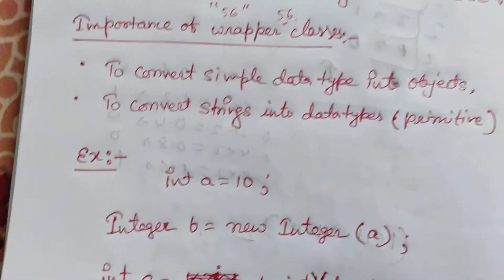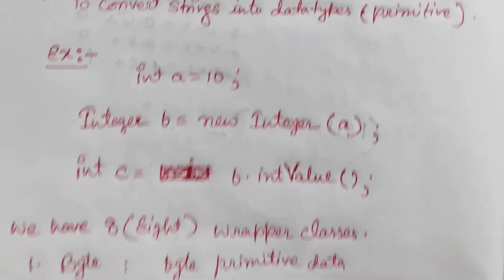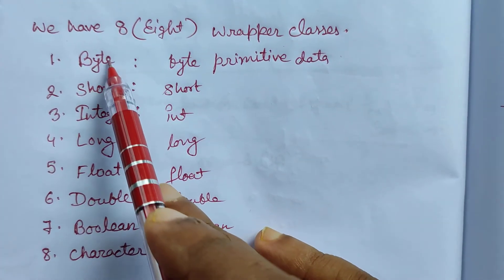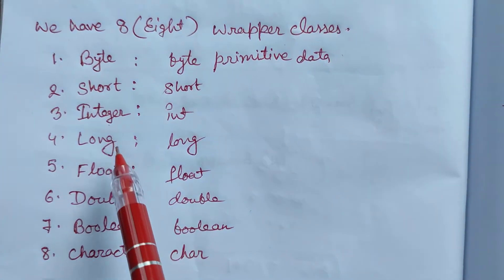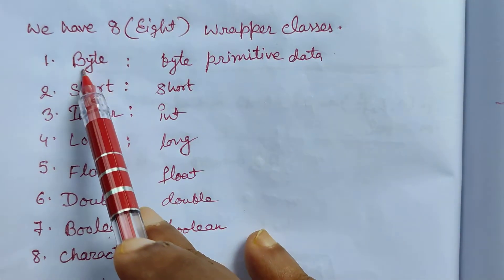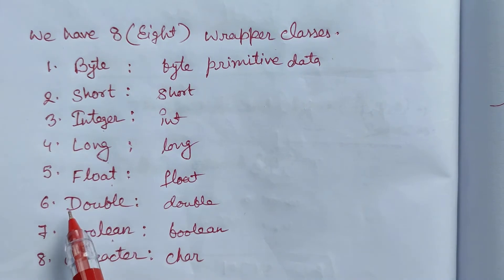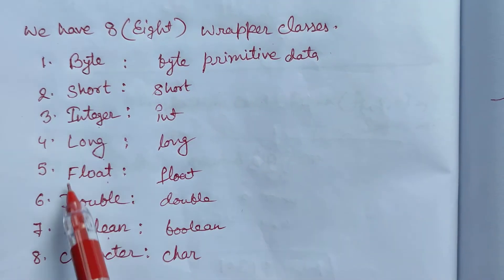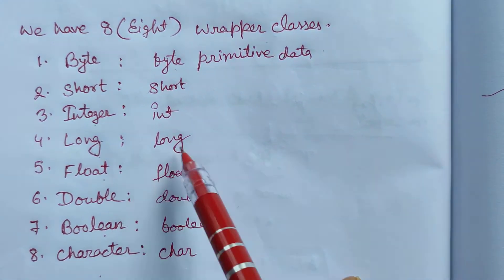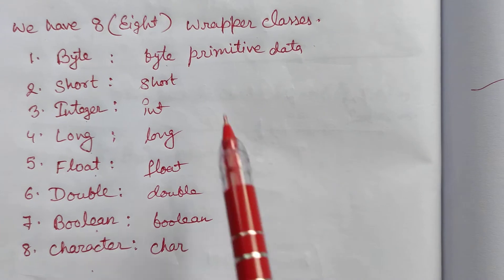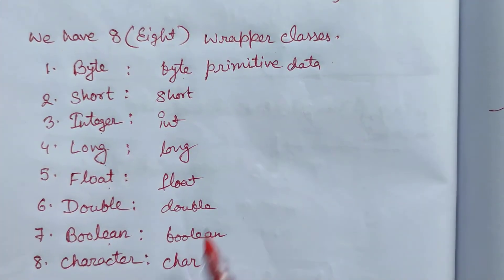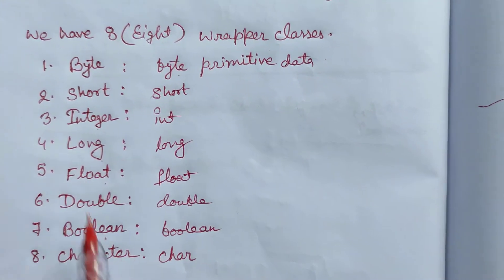We have eight wrapper classes because we have eight primitive data types. The wrapper classes are: Byte, Short, Integer, Long, Float, Double, Boolean, and Character. Now we will discuss the different functions that we use in our programs.